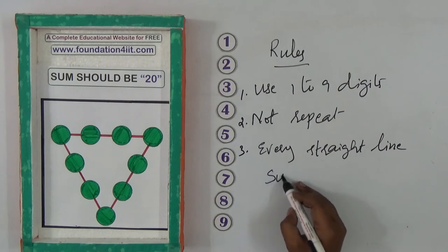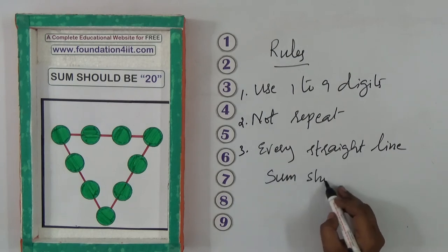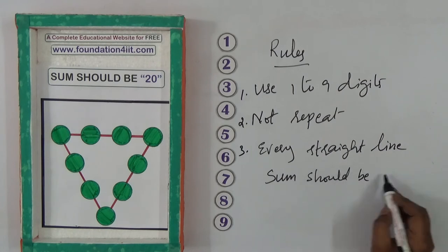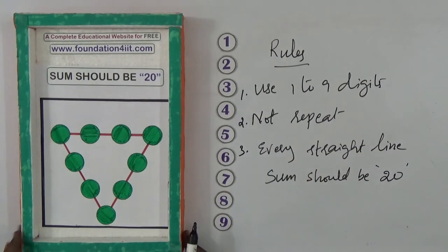The sum when you add those three or four digits should be 20. We only use one to nine. Let me explain the solution.